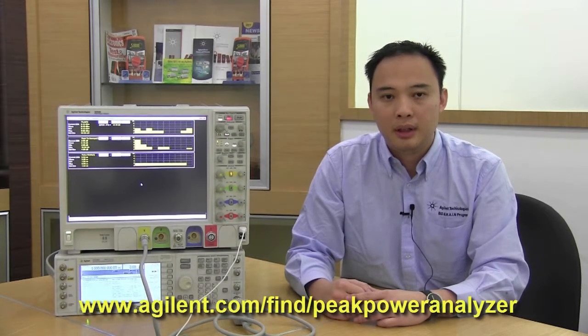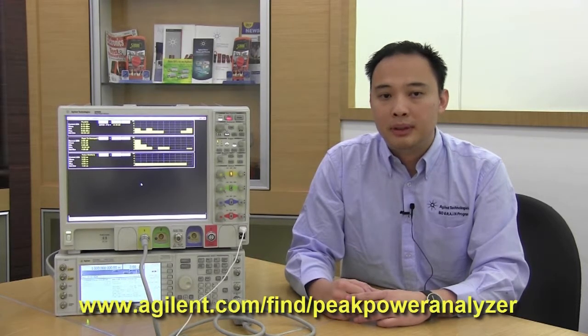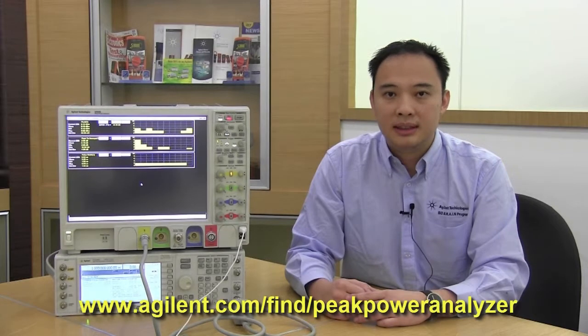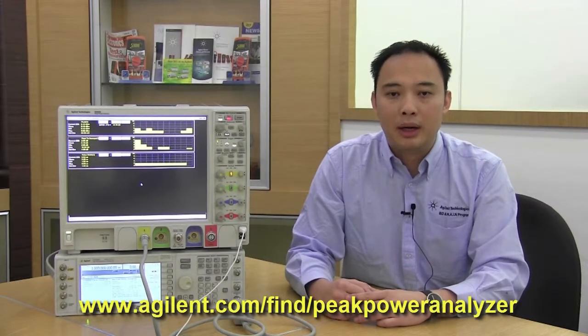For more information on the 8990B peak power analyzer and the new multipulse software, visit our website at www.agilent.com/find/peakpoweranalyzer. Thank you for watching this video.